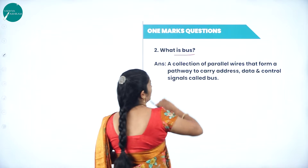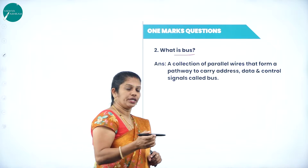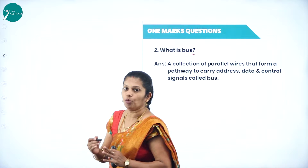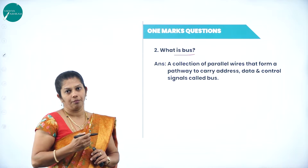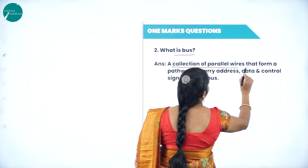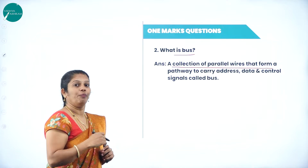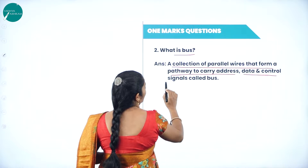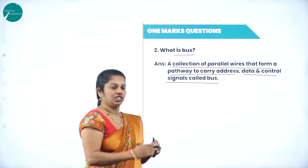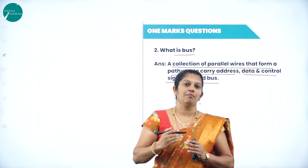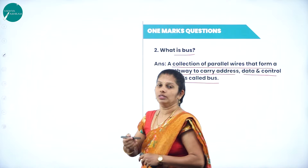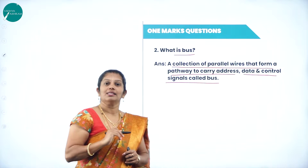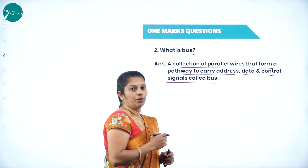The next topic is: what is a bus? A bus helps to transfer data from one component of the computer to another component. It is a collection of parallel wires that form a pathway to carry address, data, and control signals — this is called a bus. Just as a bus transfers people from one place to another, here it transfers control signals and addresses between components.